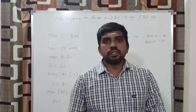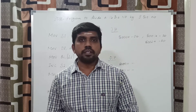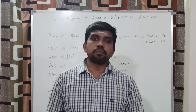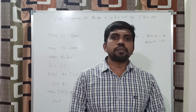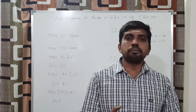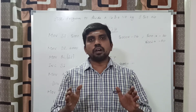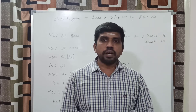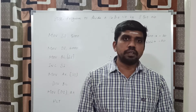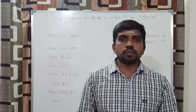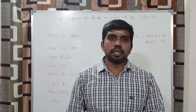Hi guys, welcome back to our channel. Today's session we are going to discuss about an 8086 division program. In this program we get two values — the first value is a 16-bit value and another value is an 8-bit value. The concept is to divide the 16-bit number by the 8-bit number. This program provides two outputs: one is the quotient and another one is the remainder.